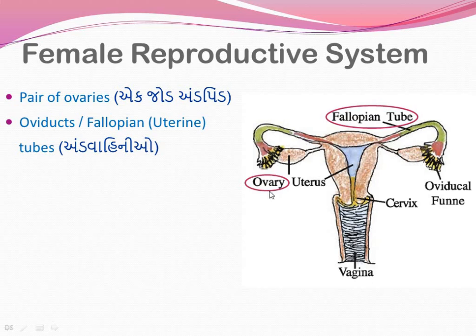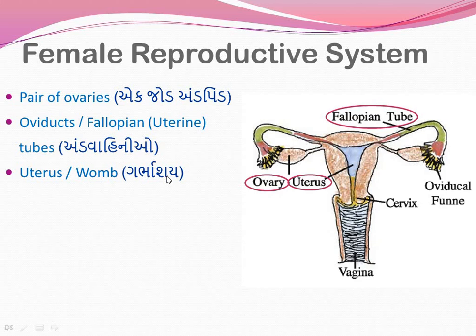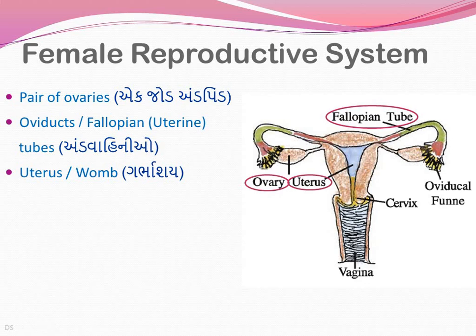The third part of the female reproductive system is the uterus or womb. Womb is a layman's term; anatomically it is referred to as the uterus. There is a single, highly developed uterus. The site of fertilization is the ampullary-isthmic junction. Fertilization means the fusion of gametes. If fertilization occurs, the fertilized structure - the zygote - will travel to the uterus and get implanted there.